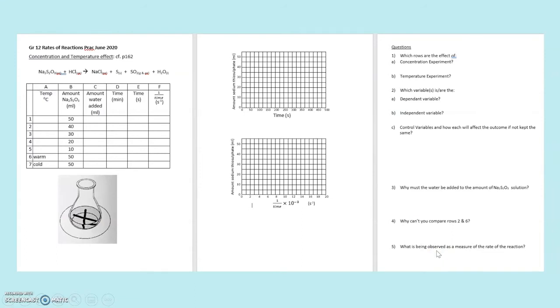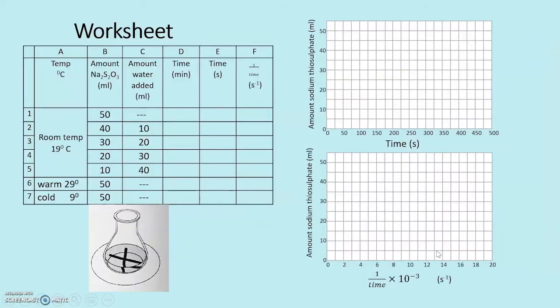There is a worksheet that goes with this prac. Let's look at the details. The first part, the concentration effect, we're going to compare how the time for the cross underneath the conical flask to not be visible as the amount of the reagent sodium thiosulfate changes. Afterwards we will do the temperature effect where we take 50 milliliters of the reagent but at different temperatures.